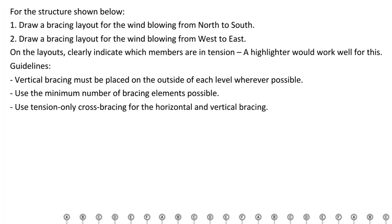For the structure shown, we need to draw a bracing layout for wind blowing from north to south, and a bracing layout for wind blowing from west to east. On our layouts we have to indicate which members are in tension. Guidelines: vertical bracing must be placed on the outside of each level wherever possible, to allow as much thoroughfare as possible, and use the minimum number of cross bracing elements. Use tension-only cross bracing for vertical and horizontal bracing.